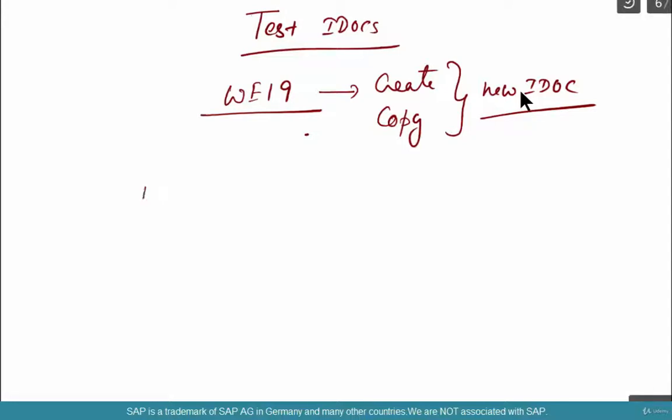Let's say you have created a new ZIDOC type, and you might be asked a question as to why you have created it. You should be able to justify that. Typically, you do it when you add custom fields. And if it is an inbound or an outbound, depending on the direction, your testing would differ.